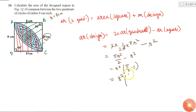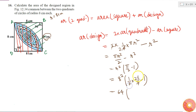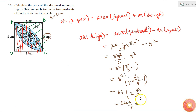Taking π = 22/7: 8² × (11/7 − 1) = 64 × (11 − 7)/7 = 64 × 4/7 = 256/7 cm². This is the area of the designed region.